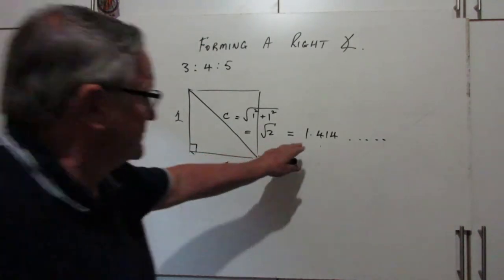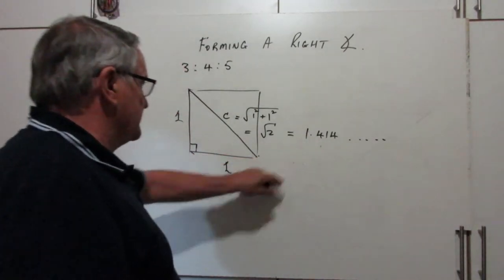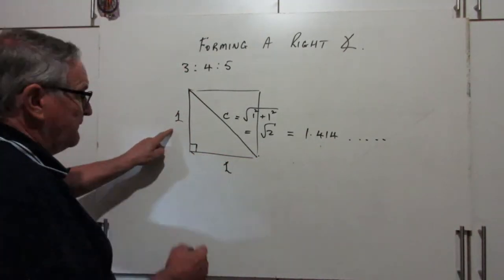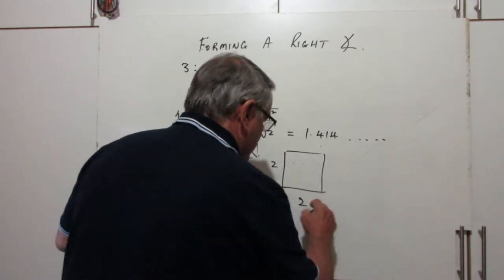But this is, if you're measuring with a tape measure or a ruler, this is usually sufficient. So, if this was a 2 meter square, 2 meters by 2 meters.